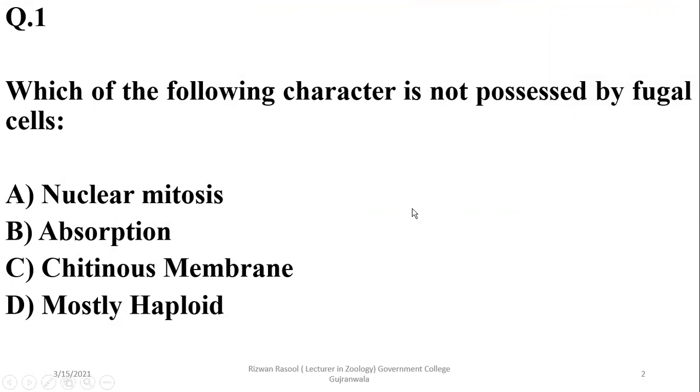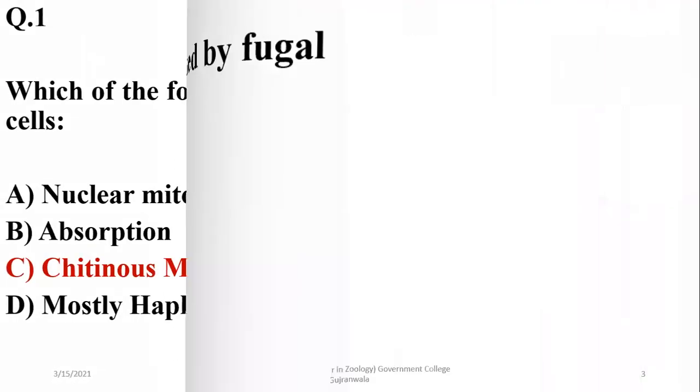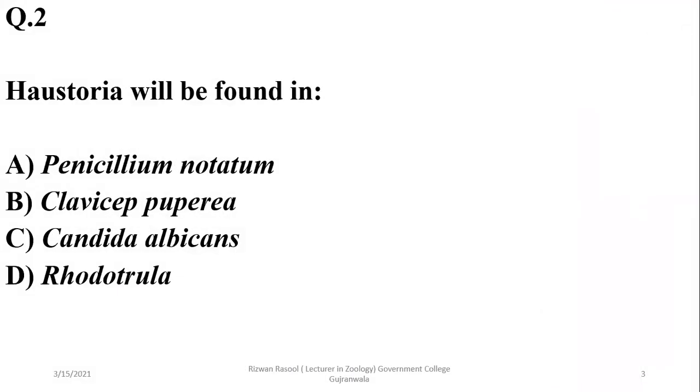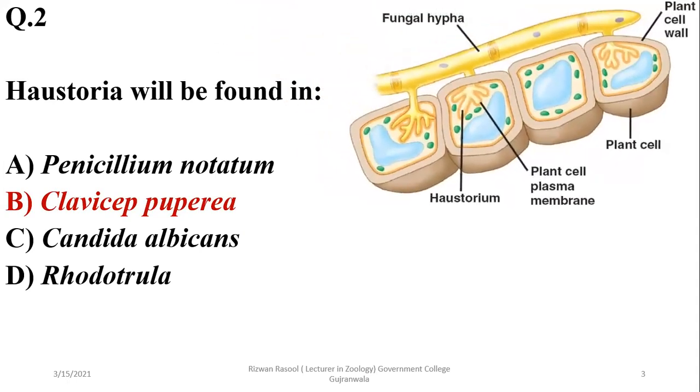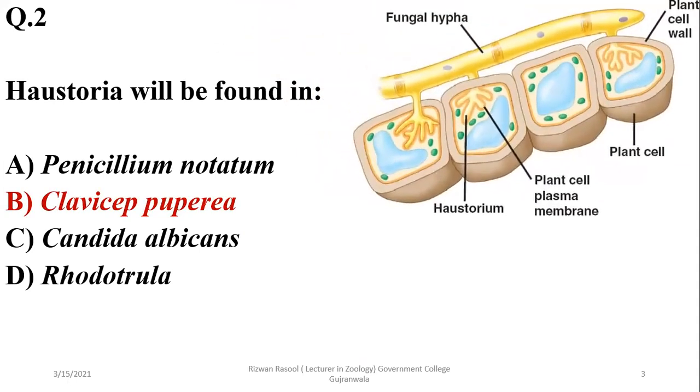Hostoria are found in parasitic fungi, and out of these given four options—Rhizopus, Peziza, or ergot, Aspergillus—they are parasitic fungi, so the right option will be B.